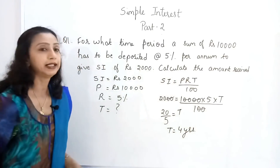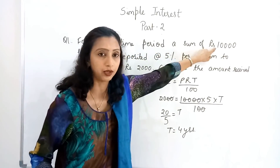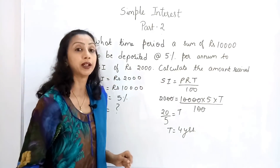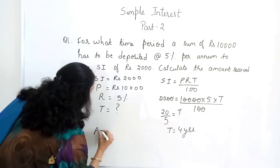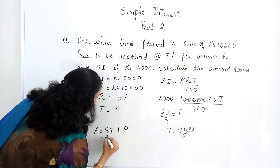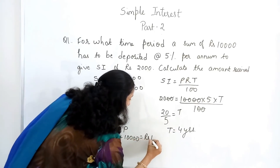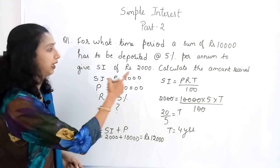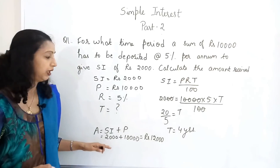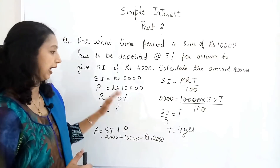So the time period is 4 years — in 4 years, ₹10,000 deposited will give a simple interest of ₹2,000. The amount received is SI + P = 2,000 + 10,000 = ₹12,000 at the end of four years. This is how we calculate amount and time period when the time period is not given.